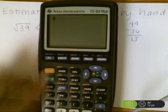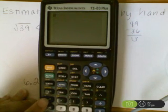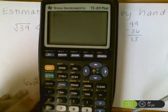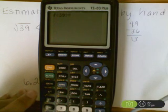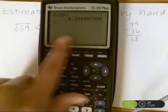I'm going to start by hitting second and then the square root key, which is where this x squared key is. When I hit the square root of 39, I get 6.24.